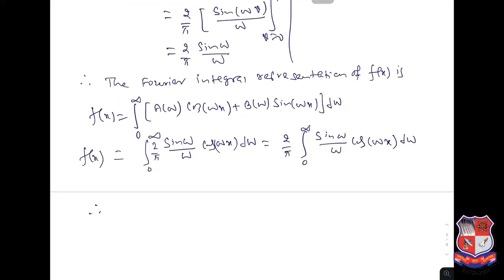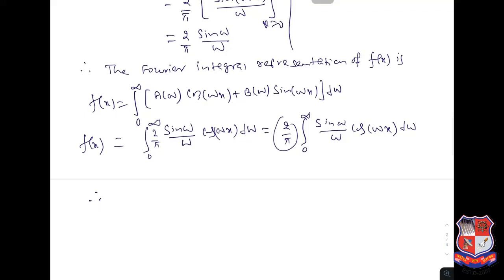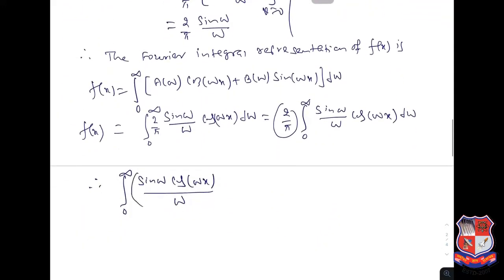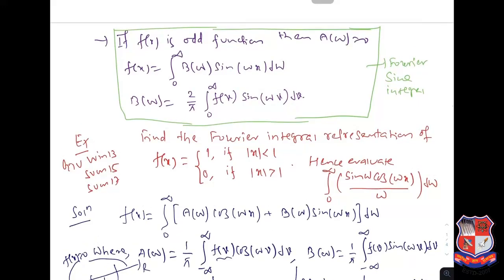This gives us f(x) = (2/π) ∫₀^∞ (sin ω · cos ωx)/ω dω. Taking (2/π) to the left side: ∫₀^∞ (sin ω · cos ωx)/ω dω = (π/2)·f(x). Now, f(x) is given as 1 when |x| < 1, and 0 when |x| > 1.